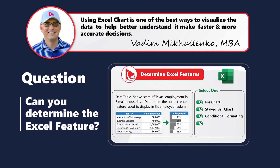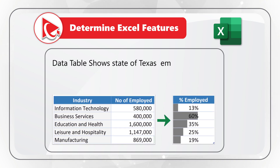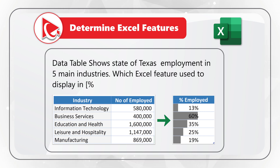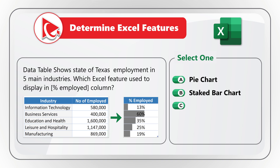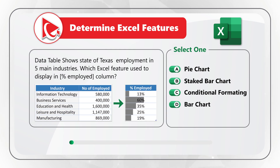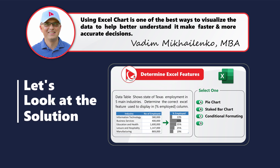Here's an amazing question to test your knowledge of Microsoft Excel features. You're presented with a data set showing industry and number of people employed — Texas employment in five key industries — and you need to determine the correct Excel feature used to display the percentage employed column. The four choices are: choice A — pie chart, choice B — stacked bar chart, choice C — advanced conditional formatting, and choice D — bar chart. Give yourself five to ten seconds to come up with the solution.